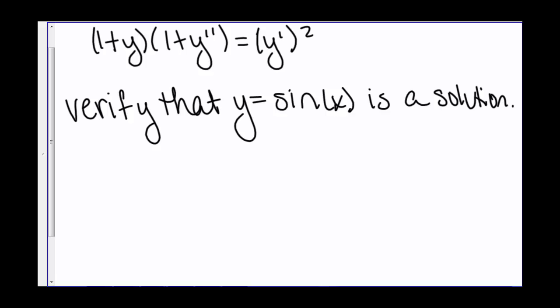If we were given the quantity (1+y) times the quantity (1+y'') equals (y')², what is the order of this differential equation? We have a second derivative there, so this is second order.